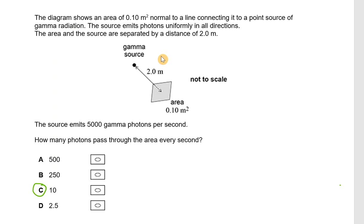Okay, so the diagram shows an area of 0.1 metres squared lying normal to a line connecting it to a point source of gamma radiation. The source emits photons uniformly in all directions, so we've got photons coming off in every single direction, and the area and the source are separated by a distance of 2 metres.